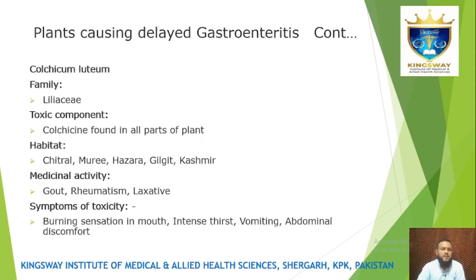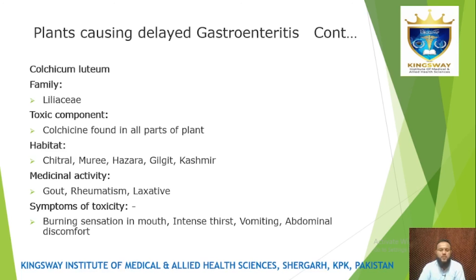Colchicum autumnale is related to Abrus precatorius in this classification. Symptoms of toxicity for Colchicum autumnale include burning sensation in the mouth, intense thirst, vomiting, abdominal pain, and discomfort.